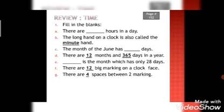Look at the part B: the long hand on a clock is also called dash hand. The big hand is called minute hand. Now look at the part C: the month of June has dash days.